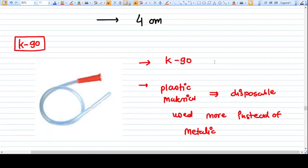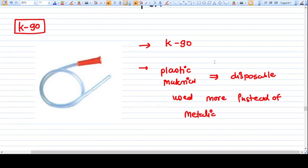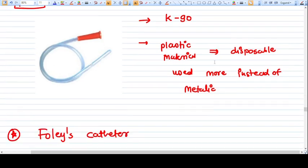Let's talk about the non-self retaining catheter. K19 or K90 is one type and a very commonly used catheter nowadays. K19 is a simple rubber tube, a simple plastic material that's disposable. It's used more nowadays for drainage of urine during surgery instead of metallic catheters.